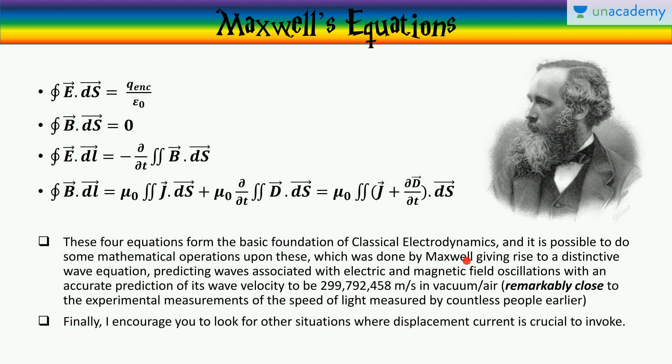And it is possible to do some mathematical operations upon these equations, mainly these two, the last two, which was done by Maxwell, giving rise to a distinctive wave equation, predicting waves associated with electric and magnetic field oscillations, with an accurate prediction of a wave velocity to be 299,792,458 meters per second in vacuum or air, which is remarkably close to the experimental measurements of the speed of light measured by many people earlier. Now this was a prediction that electromagnetic waves and light are nothing but the same.